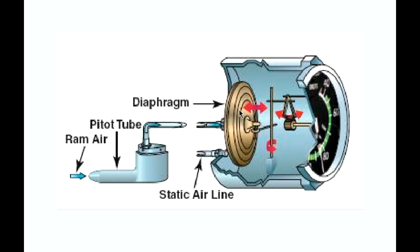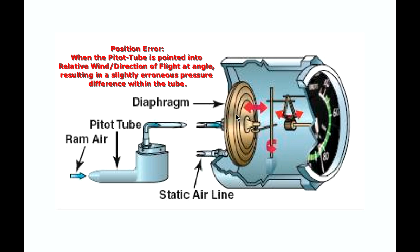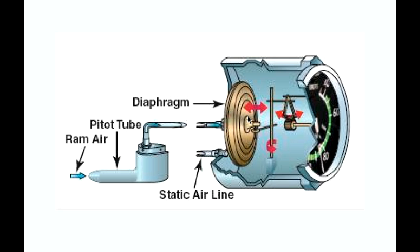Despite your actual position, the diaphragm would show a slightly higher airspeed than you actually have during a descent. The opposite occurs during a climb — it would show a lesser-than-usual airspeed. This also relates to position error. In general, with static port blockage, the diaphragm will expand a bit more during a descent and contract a bit more during a climb — the opposite of normal behavior.